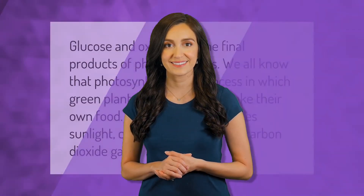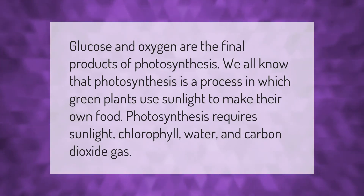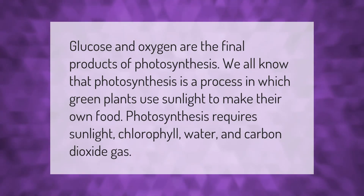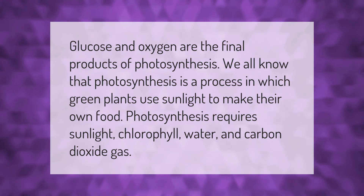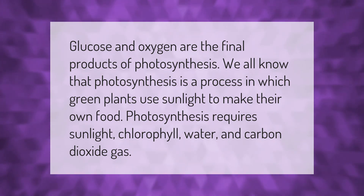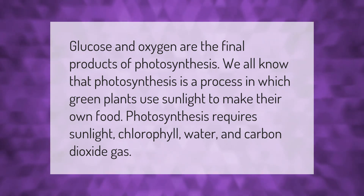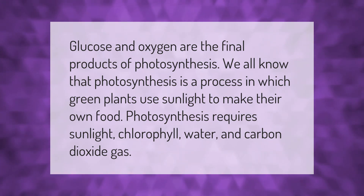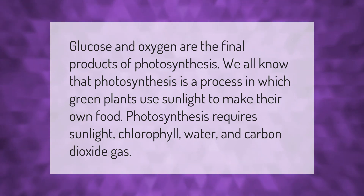Glucose and oxygen are the final products of photosynthesis. Photosynthesis is a process in which green plants use sunlight to make their own food. Photosynthesis requires sunlight, chlorophyll, water, and carbon dioxide gas.